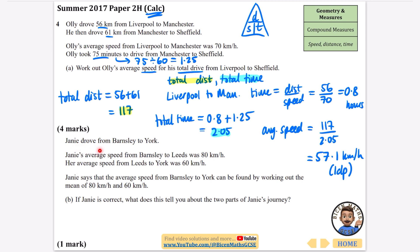The second part says Janie drove from Barnsley to York. Her average speed from Barnsley to Leeds was 80 km/h and from Leeds to York was 60 km/h. She claims her overall average speed can be found by calculating the mean of 80 and 60. You could only find the average this way if both parts of the journey took the same amount of time — they are the same amount of time.